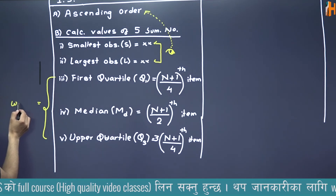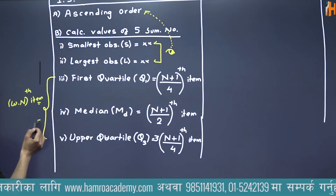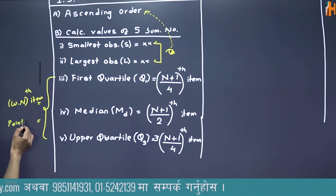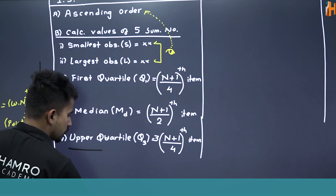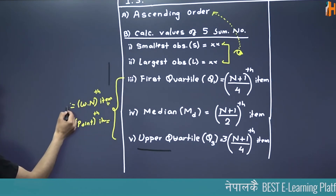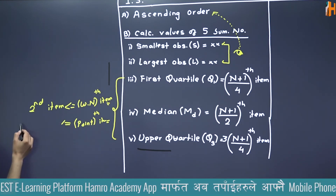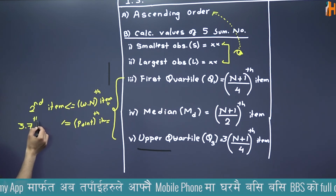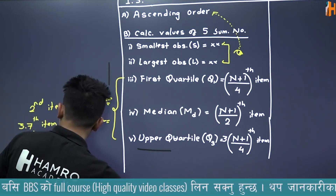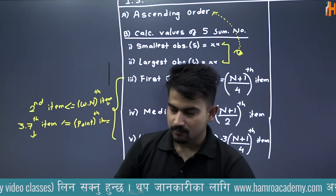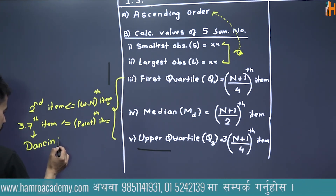What is going on? 1 is the value of the 2nd number. The 2nd number of Q3 is 3(N+1)/4 th item. The value does not fit in a whole number place — the interpolation or dancing method is used. What do you do with the dancing method?